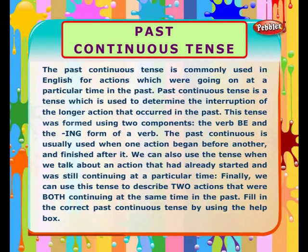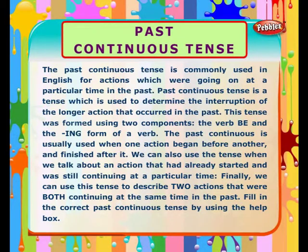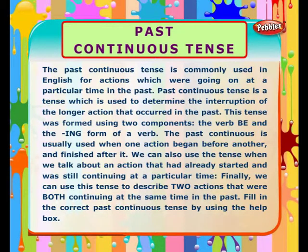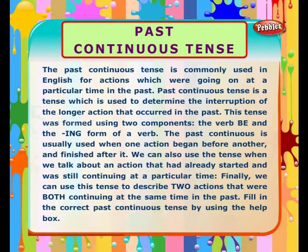The past continuous tense is commonly used in English for actions which were going on at a particular time in the past. It is used to determine the interruption of a longer action that occurred in the past. This tense is formed using two components: the verb 'BE' and the ING form of a verb.